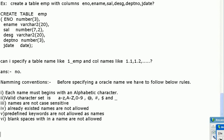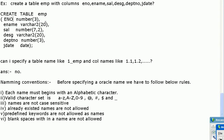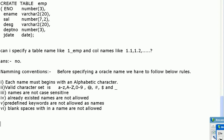Now we know the naming conventions. Next, let's understand what NUMBER(3), VARCHAR2(20), NUMBER(7,2), and DATE mean — these are known as data types.